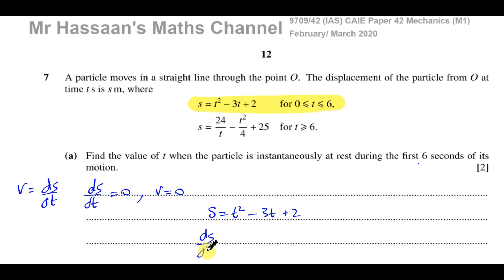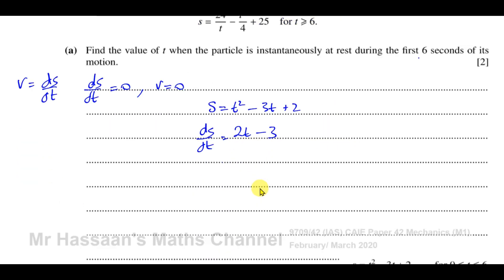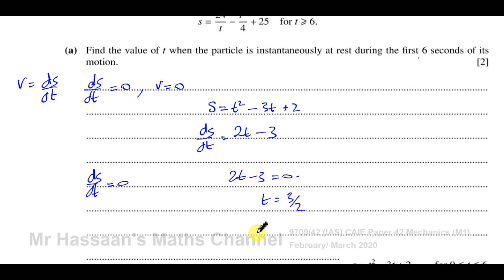We find the gradient function ds/dt by differentiating: t squared becomes 2t, and negative 3t gives negative 3, so ds/dt equals 2t minus 3. We want to find when ds/dt equals 0, so 2t minus 3 equals 0, giving t equals 3 over 2, which is 1.5 seconds. That's the answer for part A — the time at which the object is instantaneously at rest, which is the minimum point of this quadratic curve.